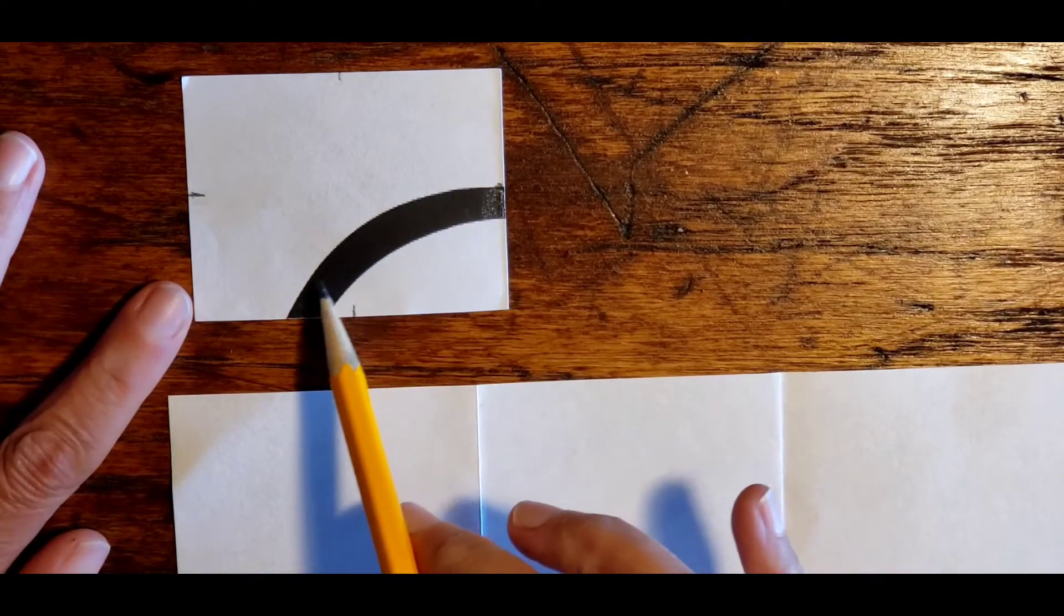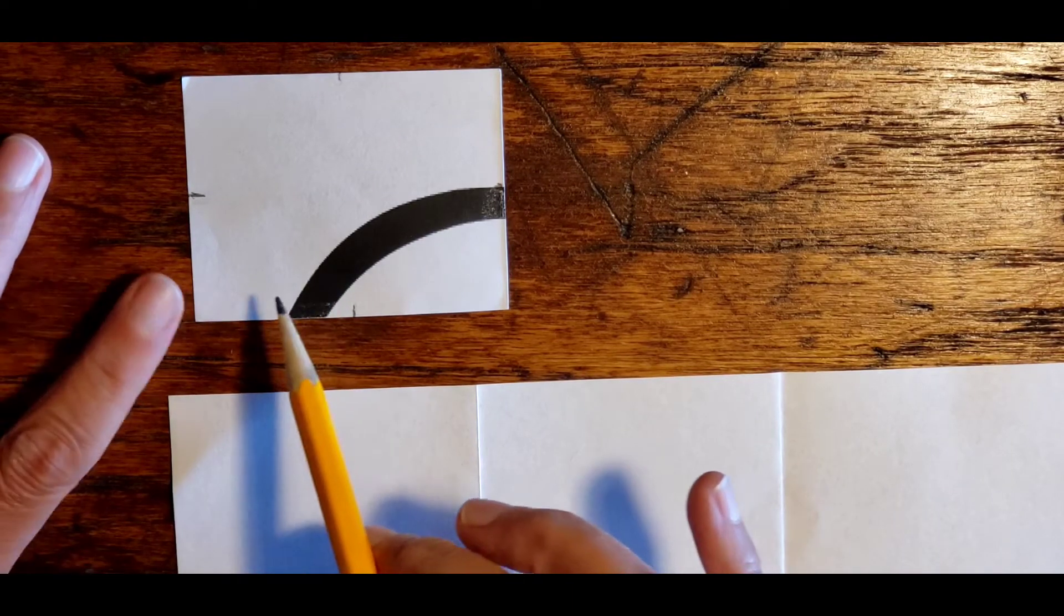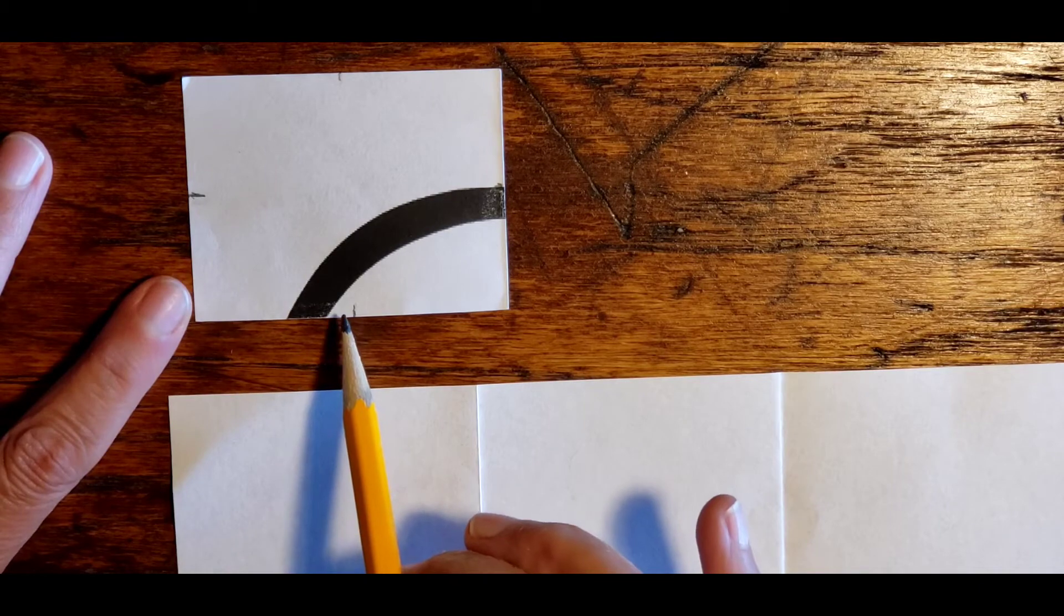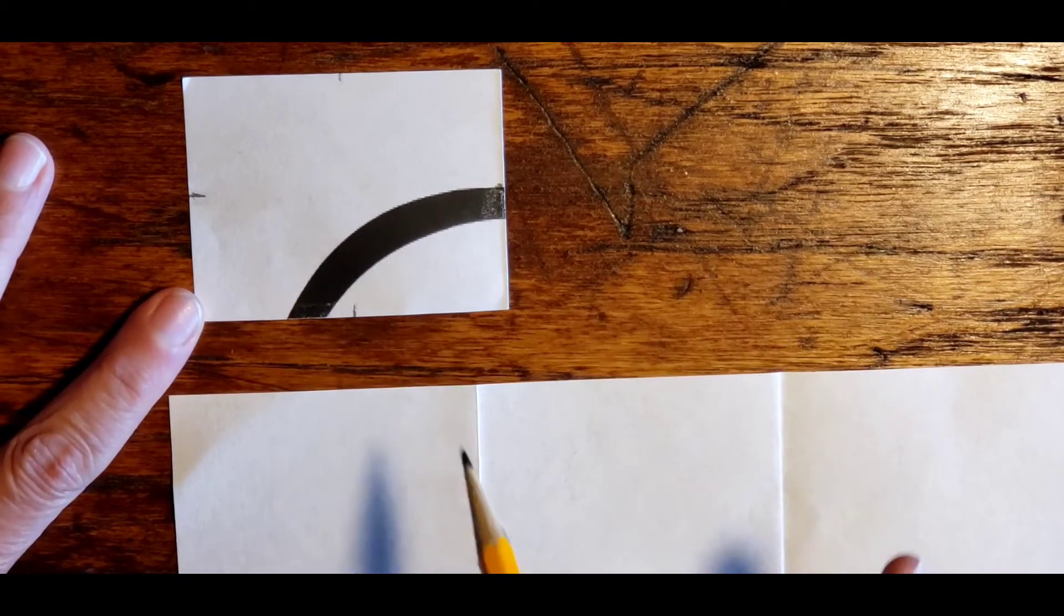Over here where that curve ends in the lower left hand corner, we're kind of comparing how much space is left there, how close it is to center. And we're going to try to match that.